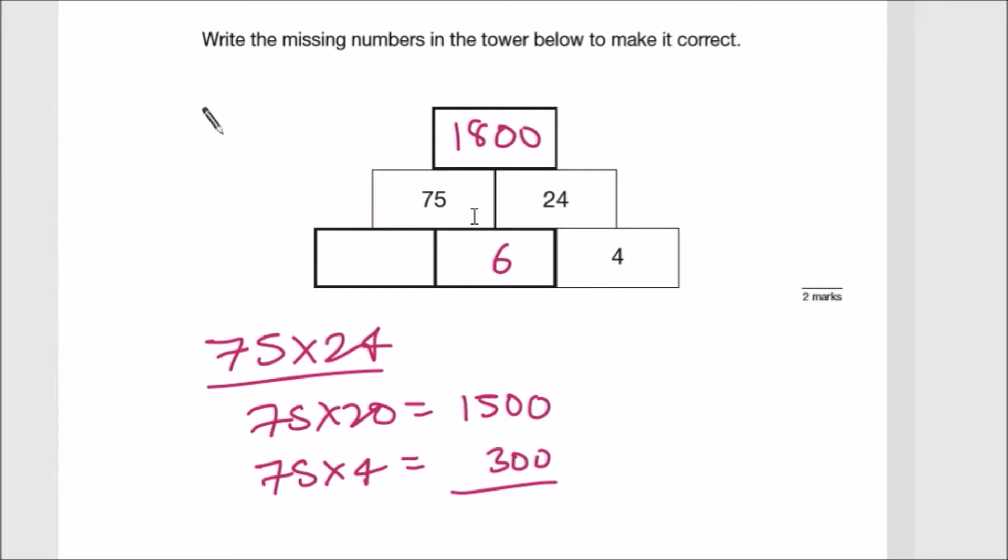To get this digit, something times 6 is 75. This would be decimal. How many sixes fit into 75? It goes exactly once remainder 1, then into 15 twice remainder 3. Put a 3 here with a 0, and 6 into 30 goes 5, so it's 12.5.